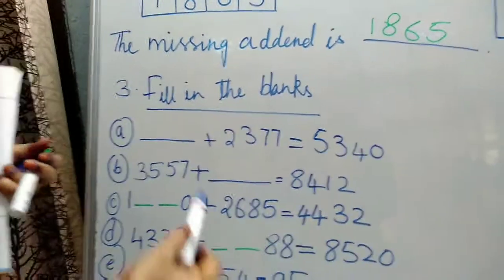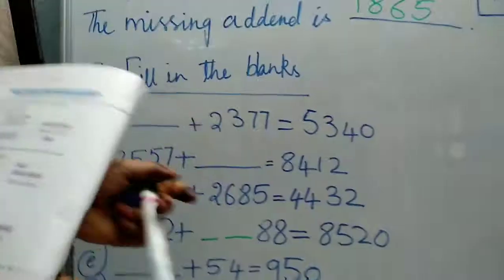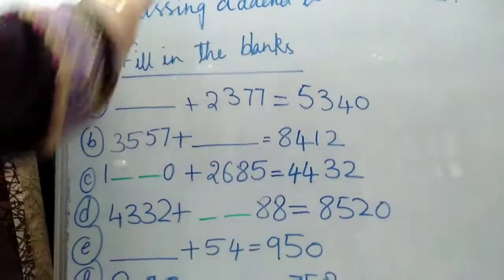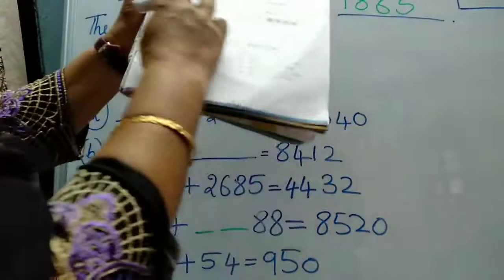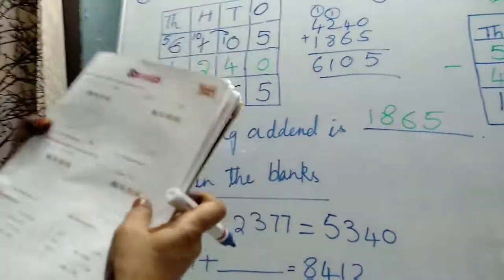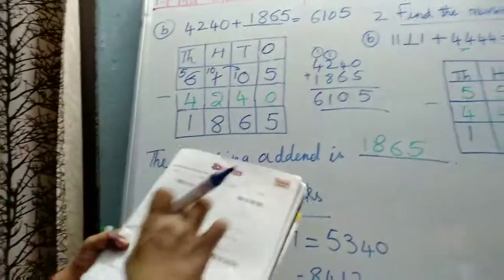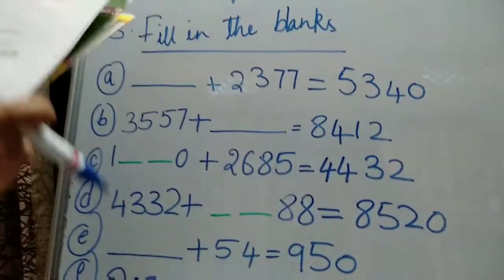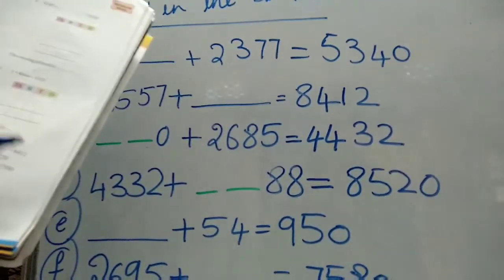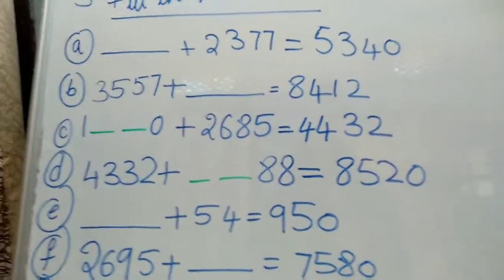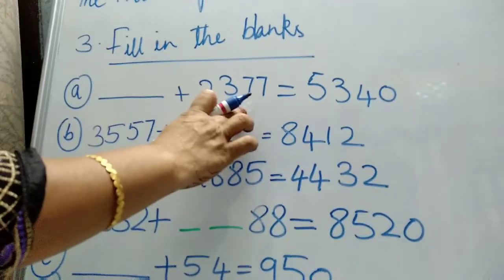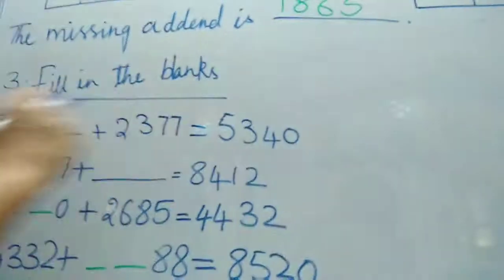Now we will do the fill in the blanks. We have completed this. I completed here. And this missing digit also I completed. The second one, only you have to copy this in your textbook, not in notebook. Copy in the textbook. Now fill in the blanks also you do here only in the textbook. First one, one addend they did not give us. So how to find out?